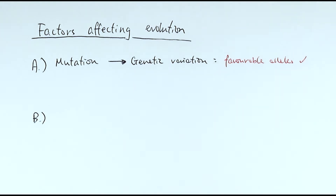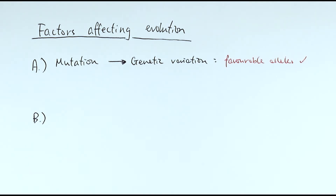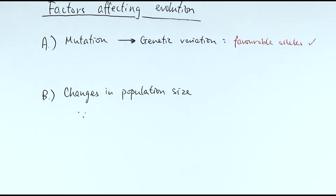The first one is mutation — a random change to the DNA base sequence in the genome of a particular organism or cell. This mutation would lead to genetic variation, and sometimes it could involve a change between a dominant allele and a recessive allele. The favorable allele would be selected, giving a particular favorable adaptation to the individual, increasing its chances to survive and reproduce. The more favorable the allele, the more likely it is to be passed on to the next generation.